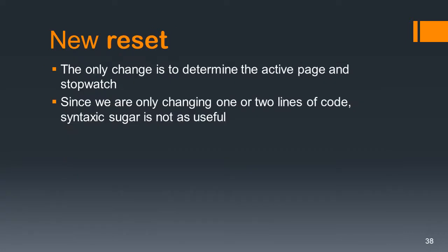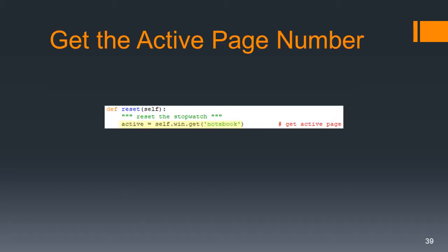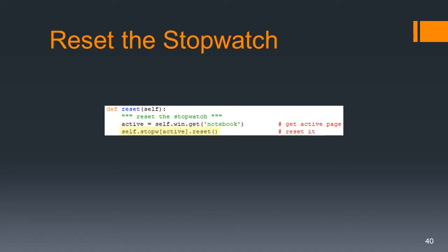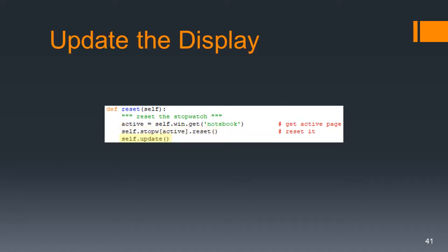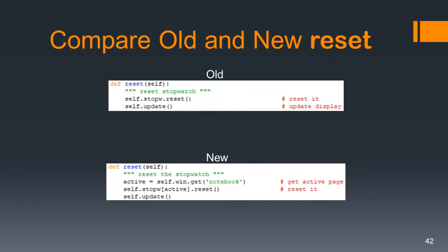For the new reset method, the only change we have to do is determine the active page and stopwatch. Since we're only changing one or two lines of code, the syntactic sugar is not as useful and we won't need it. First, get the active page number — the same code as in the previous method. Then reset the active stopwatch and update the display. The only change between old and new is adding the active part.